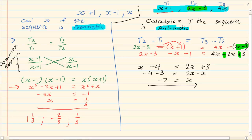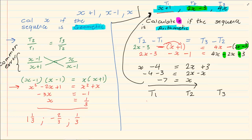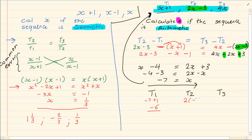They want us to calculate x, which we have done. But to get term 1, term 2, and term 3, all we have to do is substitute back into the original. Term 1 is x plus 1, so minus 7 plus 1 gives minus 6. Term 2 is 2 into minus 7 minus 3, which gives minus 17. Term 3 is 4 into minus 7, which gives minus 28. Thank you for watching.